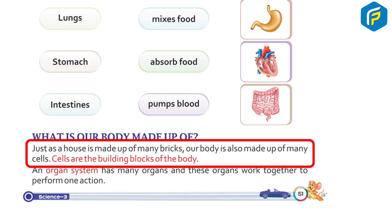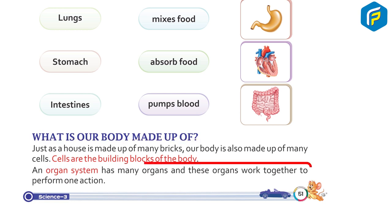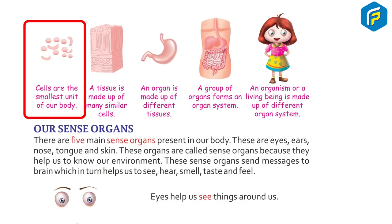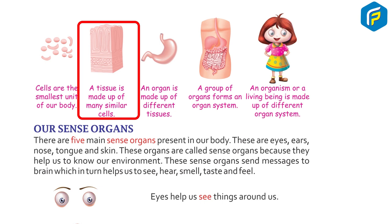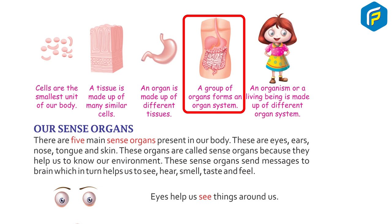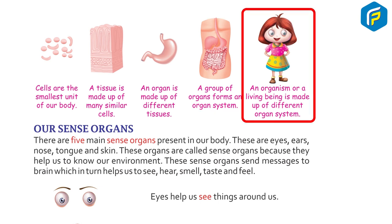Just as a house is made up of many bricks, our body is also made up of many cells. Cells are the building blocks of the body and the smallest unit of our body. A tissue is made up of many similar cells. An organ is made up of different tissues. A group of organs forms an organ system.